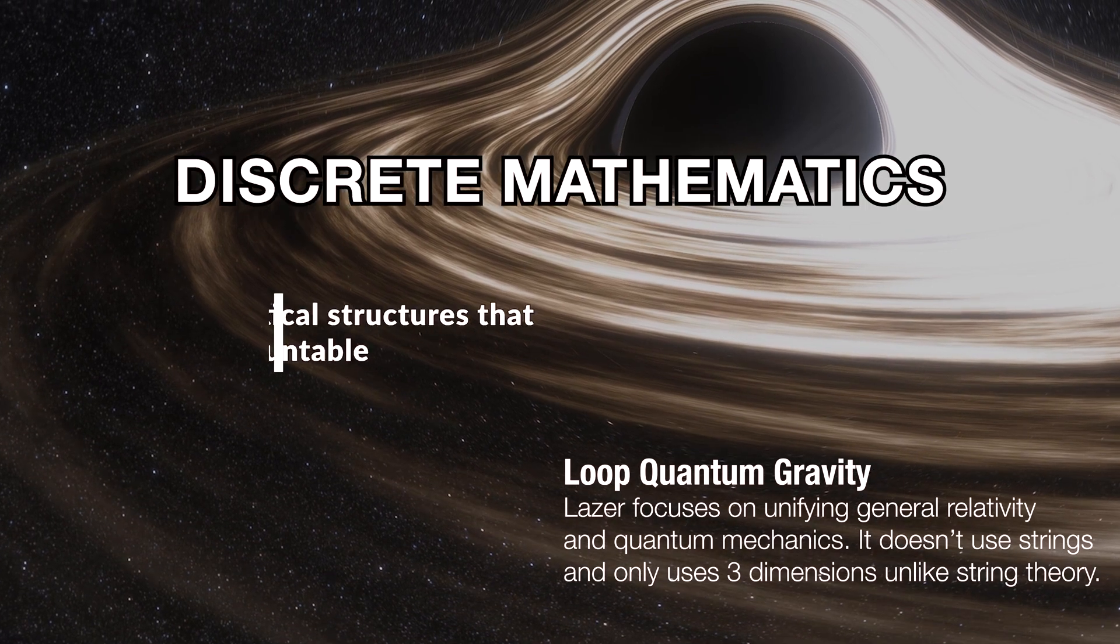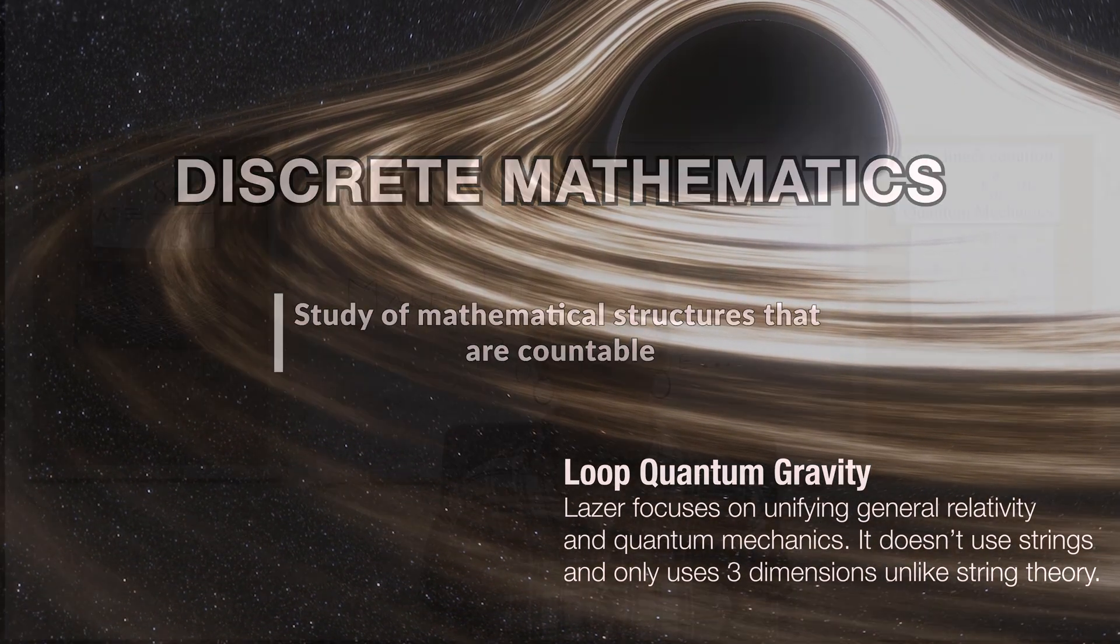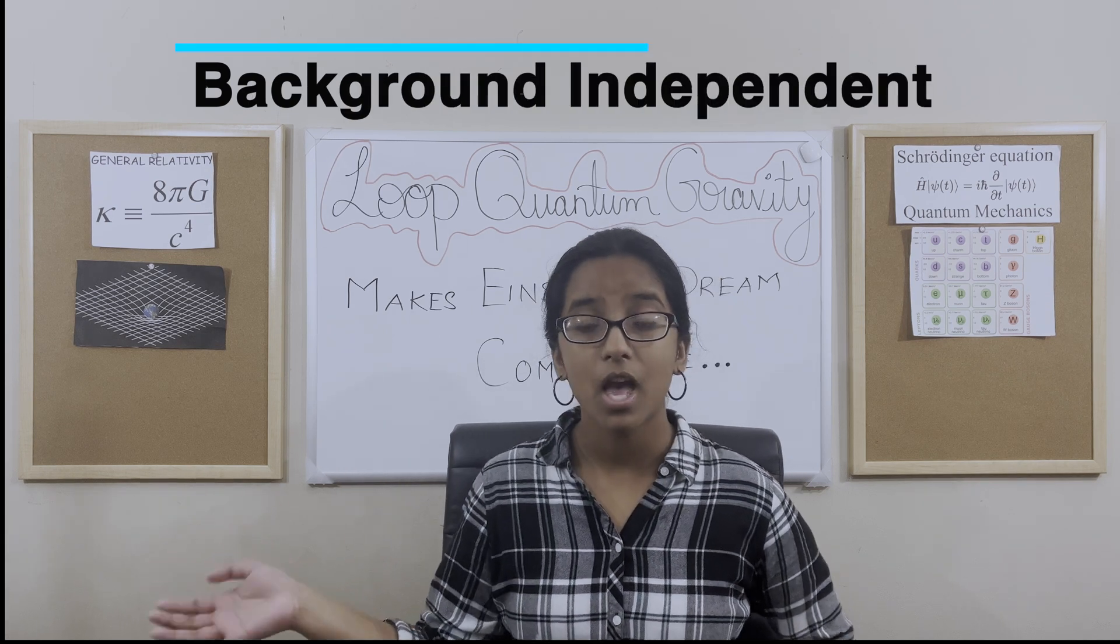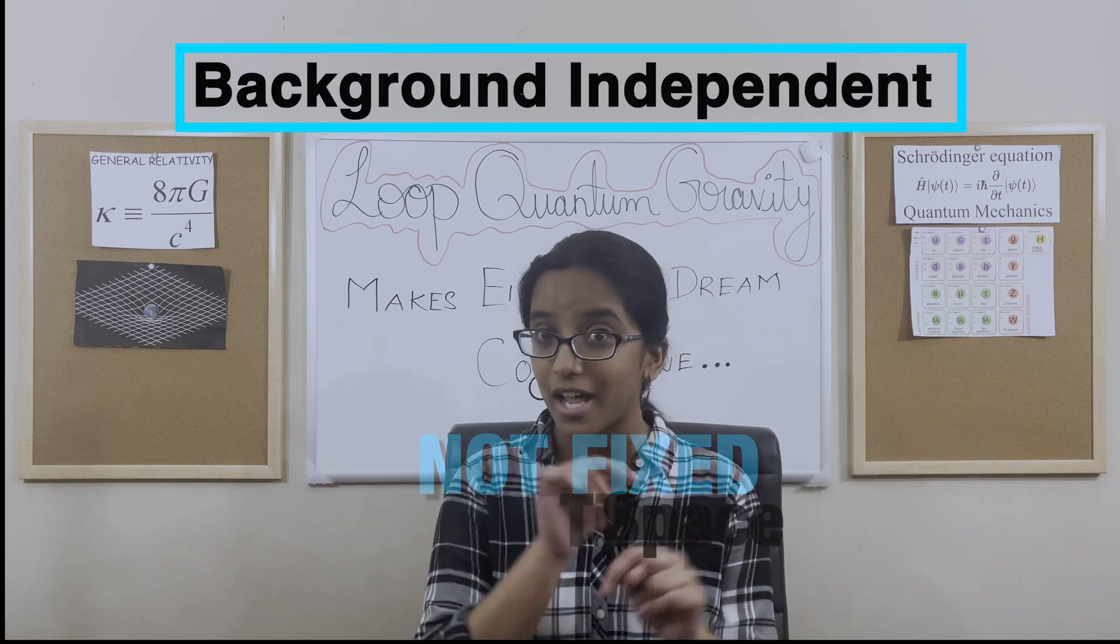This method uses discrete mathematics to avoid those problematic infinities. And loop quantum gravity is background independent like Einstein's theory of general relativity, meaning space and time are not fixed.